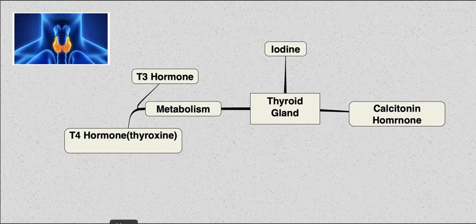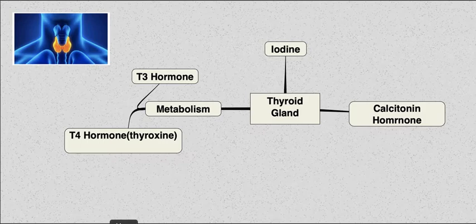The hormones excreted by the thyroid gland are iodine, T3, T4, and calcitonin. The iodine is from food and it's used to synthesize, or create, T3 and T4, which affect our metabolism.